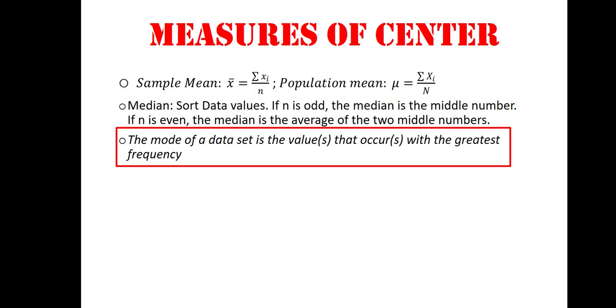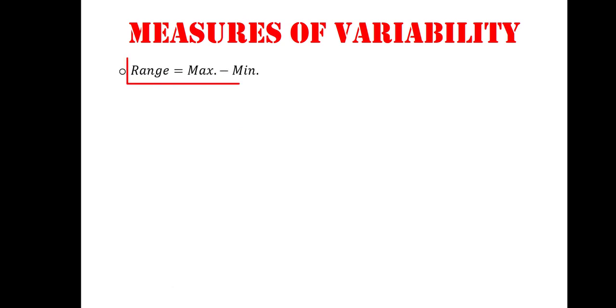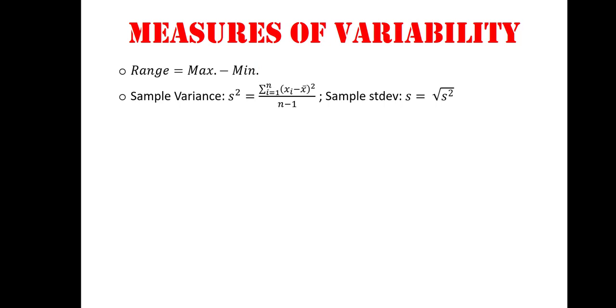or values that occur with the greatest frequency. Then we have our measures of variability. We have the range, which is simply the maximum value in our data set minus the minimum value. We have the sample variance s-squared,